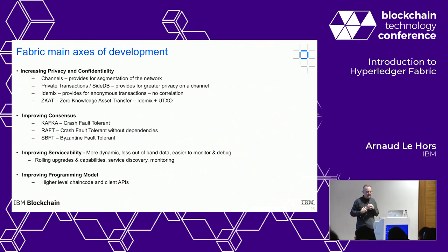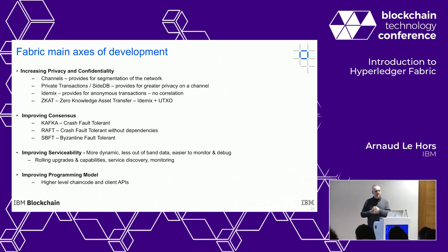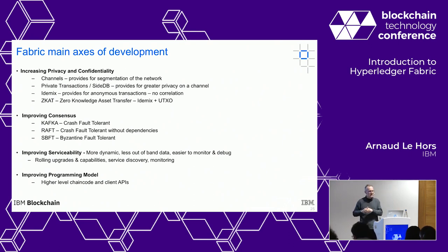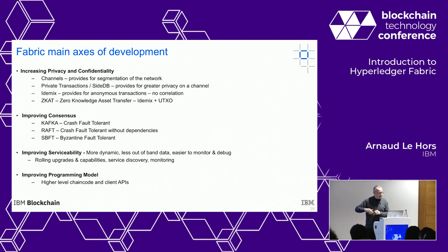Further development underway is called Zero Knowledge Asset Transfer (ZCAT), which mixes the UTXO model — familiar from Bitcoin, as opposed to Ethereum's contract model — with Identity Mixer, adding privacy to asset transfers.